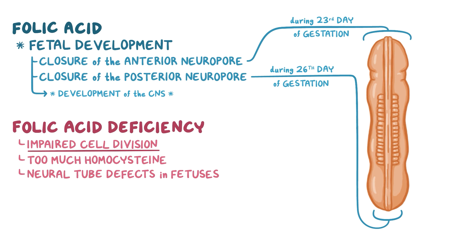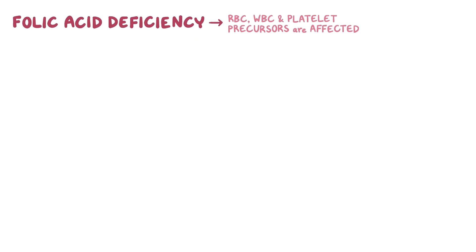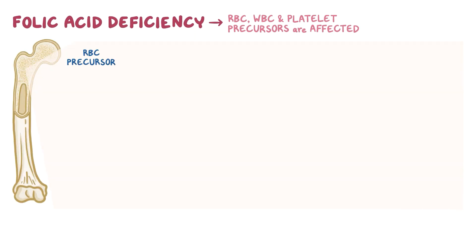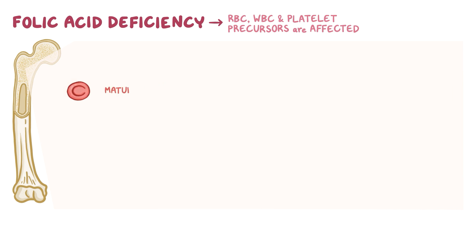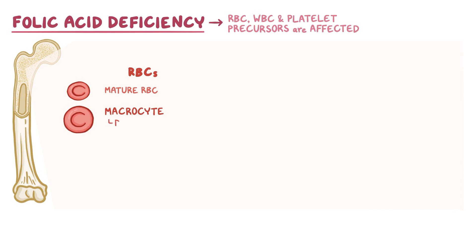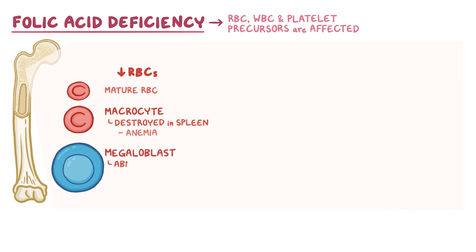When cell division grinds to a halt, rapidly dividing cells in the bone marrow, such as red and white blood cells as well as platelet precursors, are affected. Inside the bone marrow, red blood cell precursors are normally big and plump, and they undergo a series of cell divisions which results in smaller, mature red blood cells. With folate deficiency, the bone marrow pumps out larger but still mature red blood cells called macrocytes. These red blood cells are destroyed in the spleen, which causes a decrease in the total red blood cell count, or anemia. In response, the bone marrow compensates by releasing megaloblasts, which are abnormally developed red blood cell precursors, into the blood, and the final result is macrocytic megaloblastic anemia.